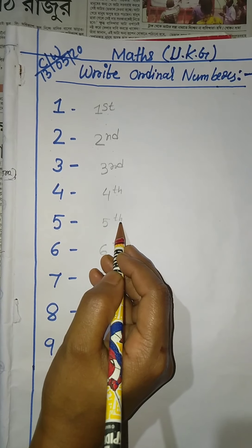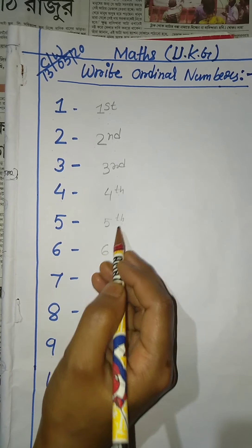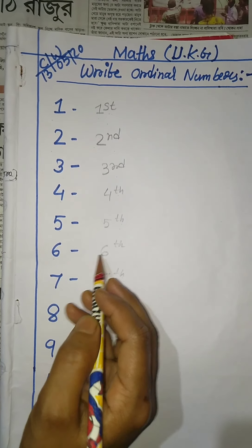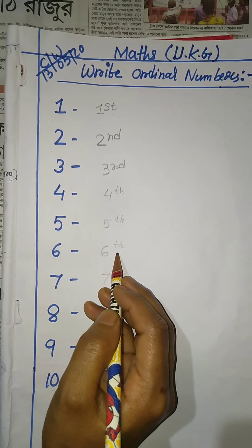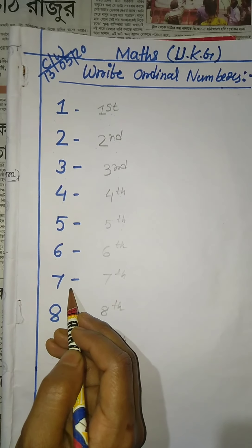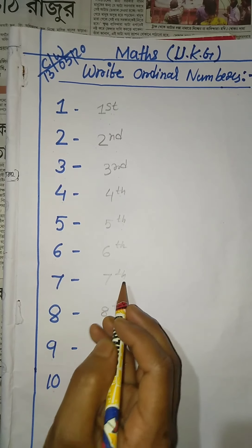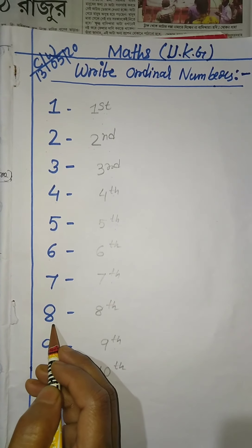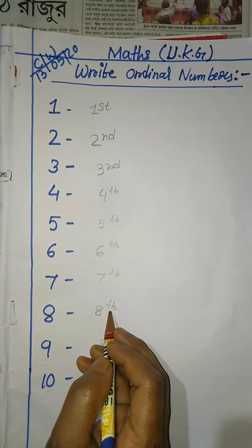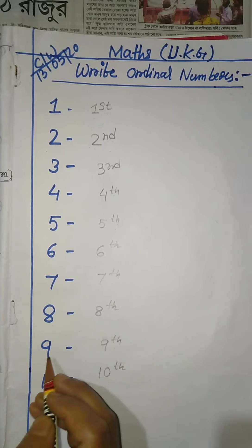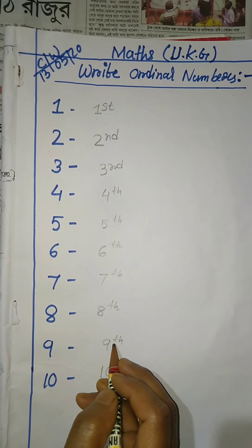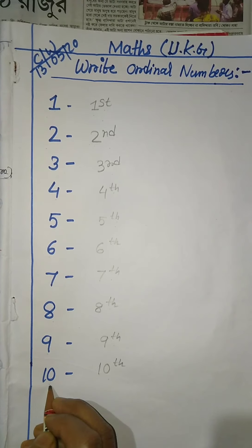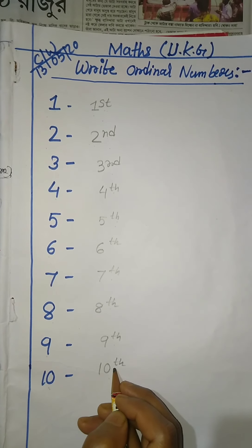Five ordinal number is fifth. Six ordinal number is sixth. Seven ordinal number is seventh. Eight ordinal number is eighth. Nine ordinal number is ninth. Ten ordinal number is tenth. So these are called ordinal numbers.